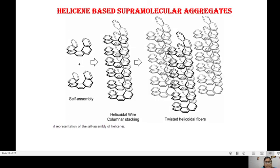These are helicene based supramolecular aggregates. These are helicoidal wire columnar stacking and this is twisted fiber. All these have very good electrical and photo properties. You can use these for electrical supramolecular assemblies.